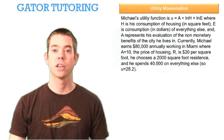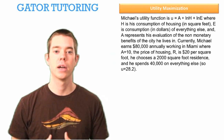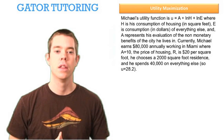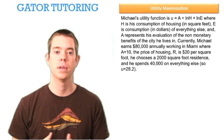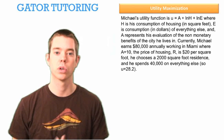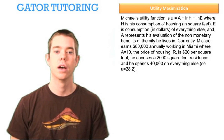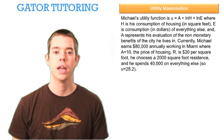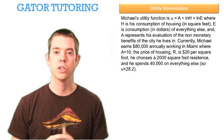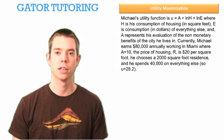This question starts off by giving us some information about Michael, his utility function, the amount that he earns in his current city Miami, where he thinks that the amenity value A is equal to 10, the price of housing in Miami is $20, and he chooses a 2,000 square foot house and spends $40,000 on everything else. We don't really use any of that information for the first couple questions here, so we'll visit it later.